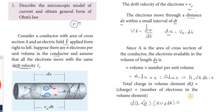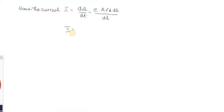The current formula: I equals dq by dt equals e into n into A into vd into dt divided by dt. The dt cancels, giving I equals n into e into A into vd — drift velocity. So I = nеAvd.